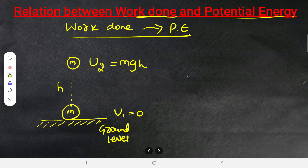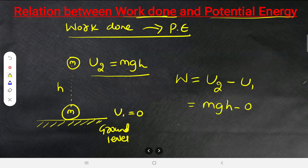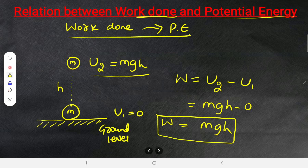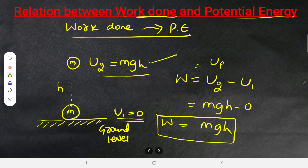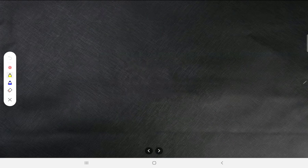Work done equals final potential energy minus initial potential energy: W = Uf − Ui = mgh. The potential energy changed from zero to mgh. You can also write work done as W = U₂ − U₁.